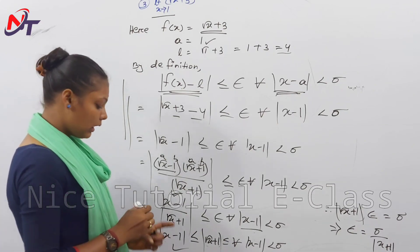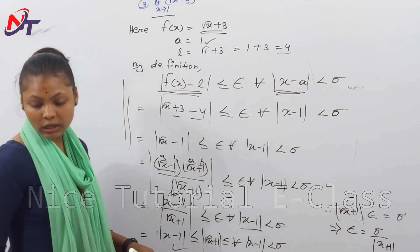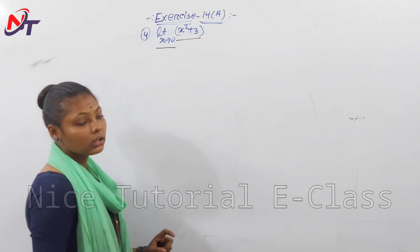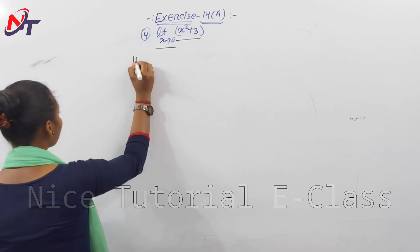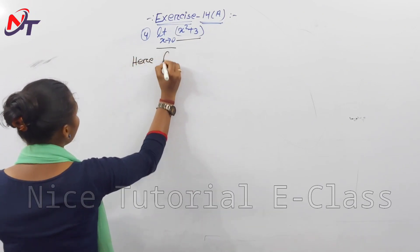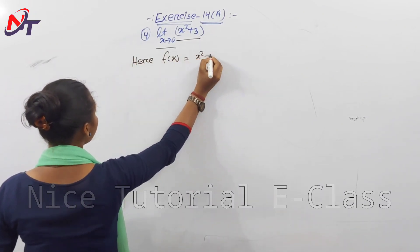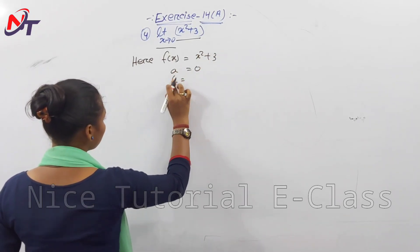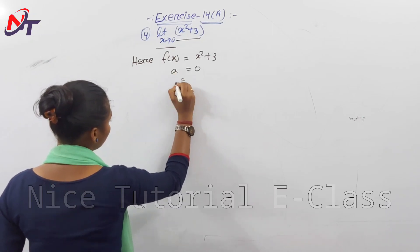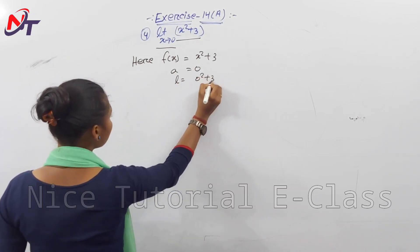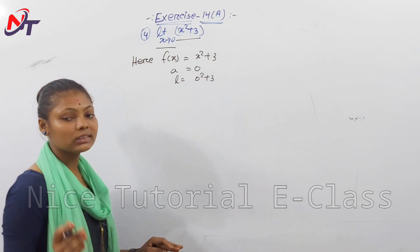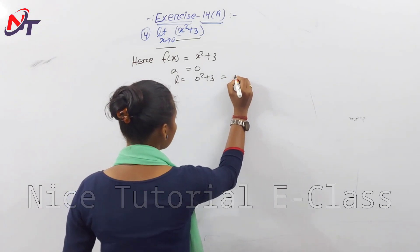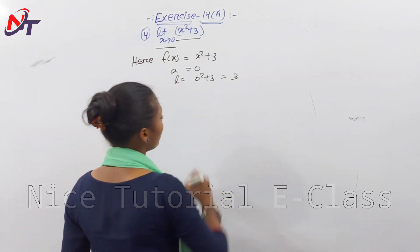Now let us see question number 4: limit as x tends to 0 of x squared plus 3. Similarly, using the same method: a equals 0, and L equals f of 0, which is 0 squared plus 3, that is 0 plus 3, equal to 3.